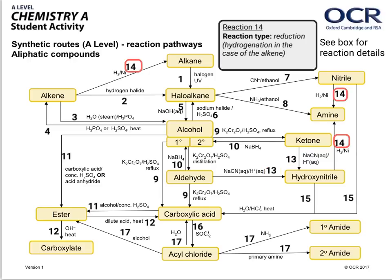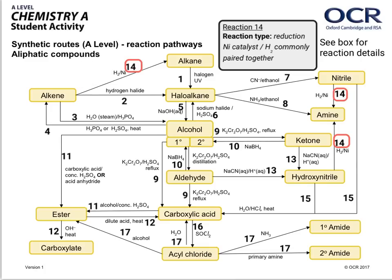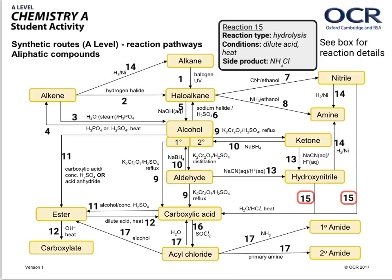In reaction number 14 we're looking at a reduction — hydrogenation in the case of the alkyne. It's also worth pointing out that nickel and hydrogen are commonly paired together. Reaction 15 is hydrolysis — the acid has to be dilute and it has to be heated, as suggested in the reaction scheme. The side product here is NH₄Cl, ammonium chloride.